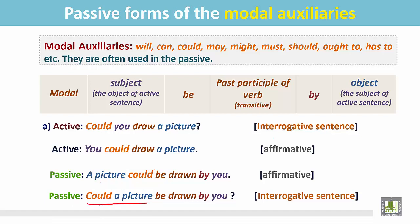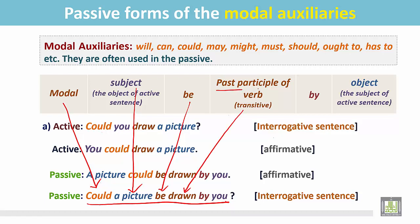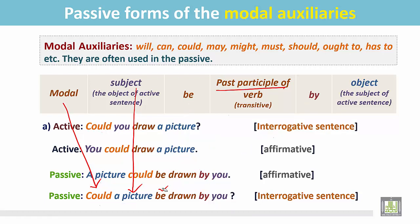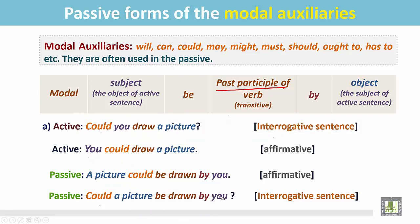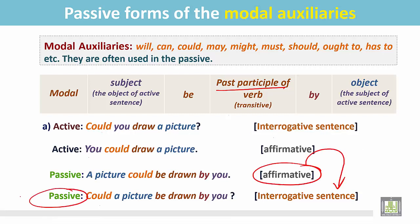'Could a picture be drawn by you?' It starts with the modal, then the subject, then 'be', followed by the transitive verb in the past participle form, then the preposition, and the subject of the active sentence becomes the object in the passive: 'you'. 'Could a picture be drawn by you?' The affirmative sentence has been changed into an interrogative sentence in the passive form.